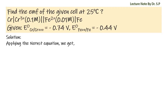Solution: applying the Nernst equation, we get emf of given cell is equal to standard electrode potential of cell minus universal gas constant R temperature T by number of mole of electrons transferred n Faraday constant F ln molar concentration of reduced species by molar concentration of oxidized species. Here reduced species is chromium and oxidized species is iron.